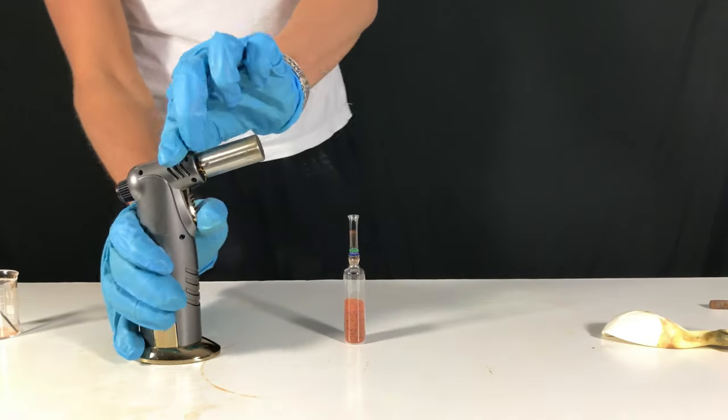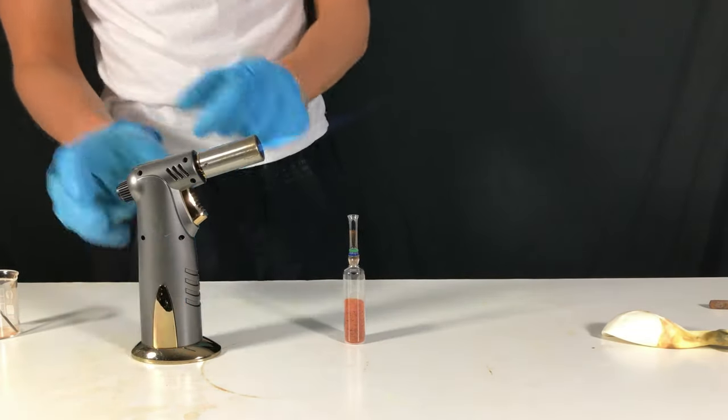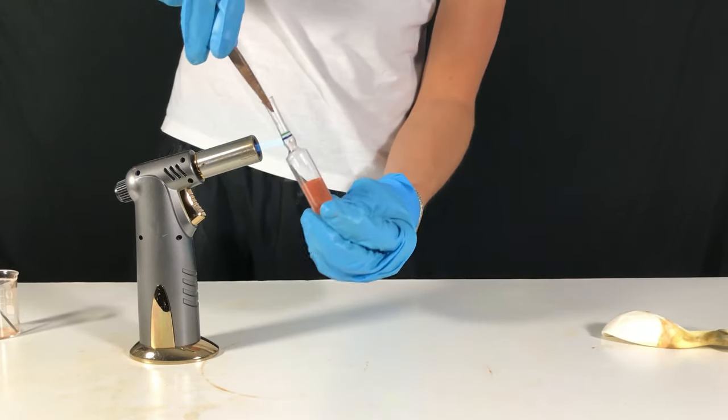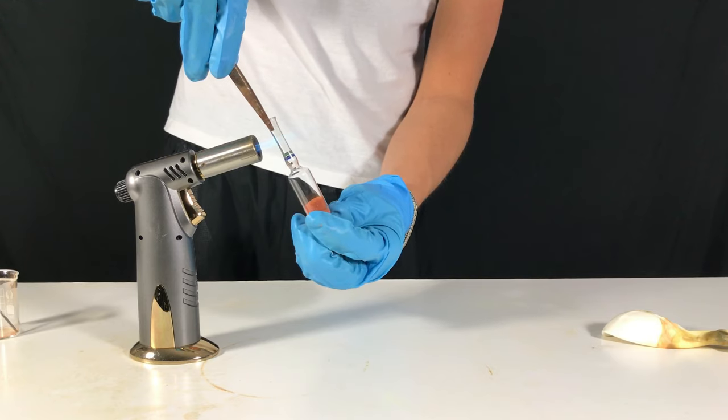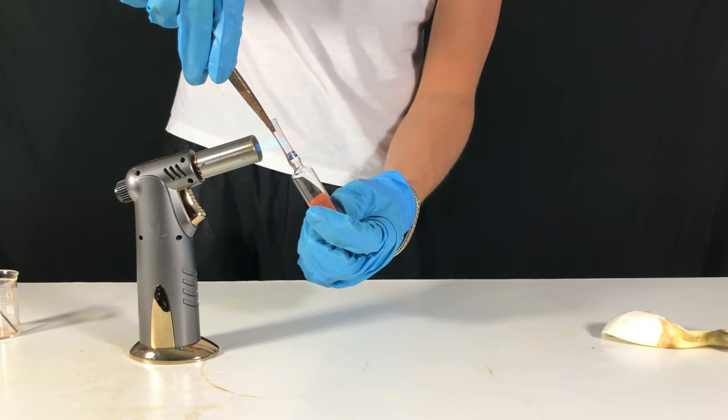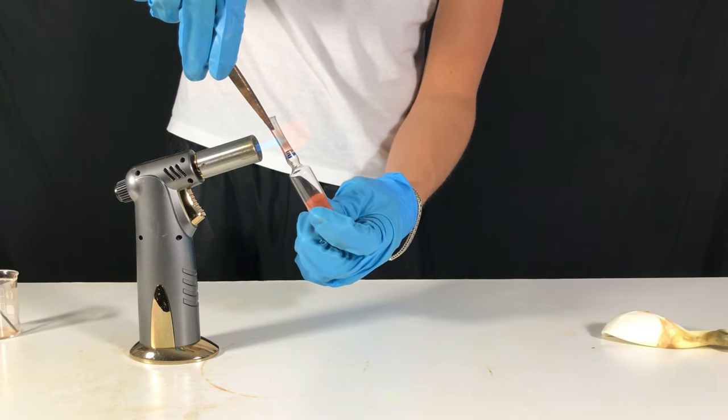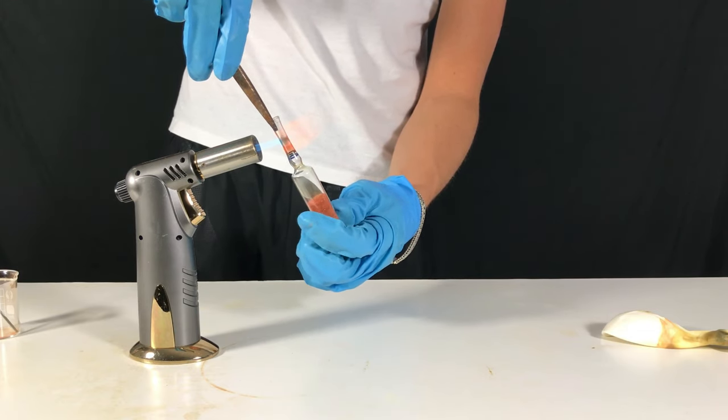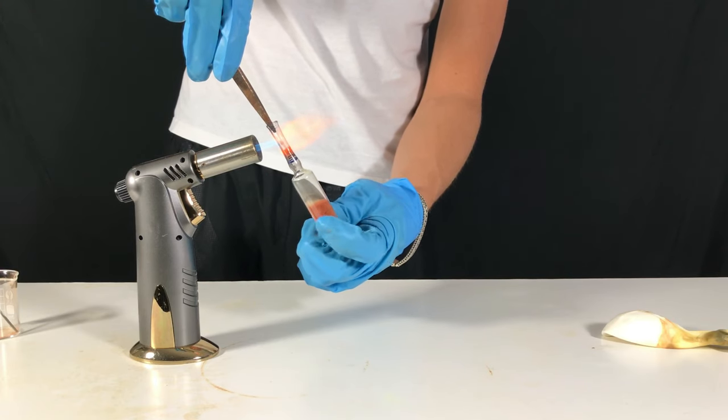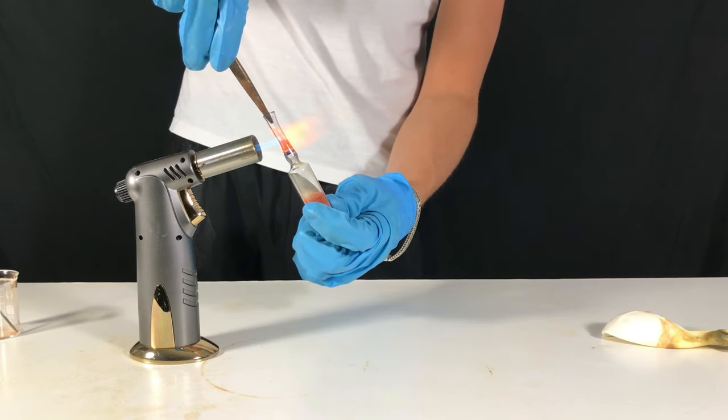The ampule was carefully sealed using a Bunsen burner. The black stuff you see forming at the top of the ampule should actually be metallic tin.